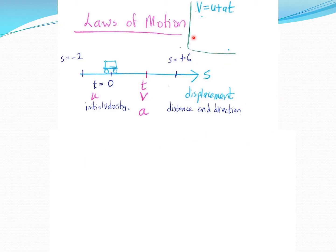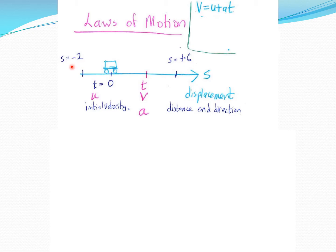When studying speeds and velocities, direction is important. We keep things simple and linear — going along a straight road. The positive direction is one way, the negative direction the other. s stands for displacement or distance. For example, a displacement of plus six meters or minus two meters — the minus just gives a sense of direction.